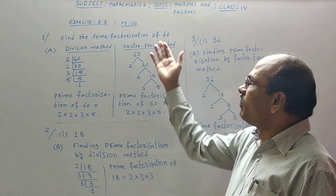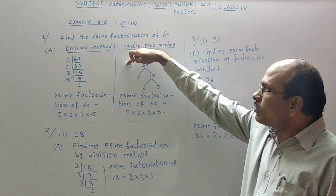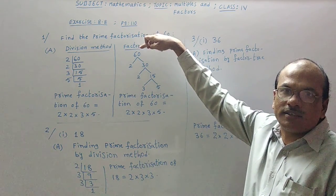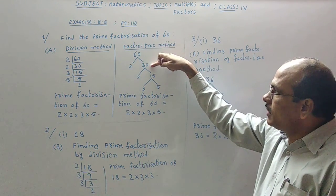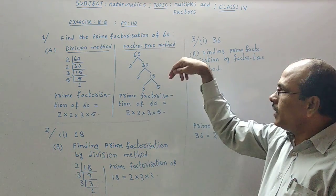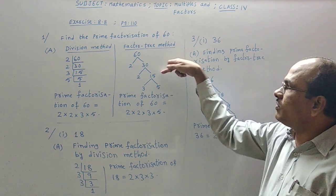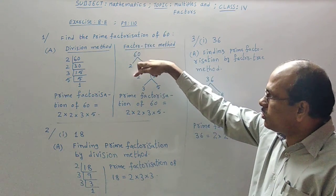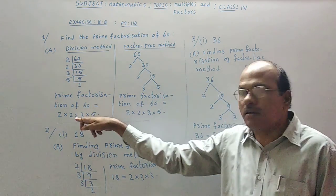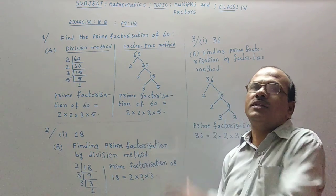The same way, your factor tree method for same 60 only. 60 taken. 2 table I have used, 2 times 30 is 60. Again you know that 30 dividing with 2 table, 2 times 15 is 30 only. Again 15 is dividing with 3 table, 3 times 5 is 15. So 2, 2, 3, 5, all these are written here as I have written there. These are called prime factorization of given 60.